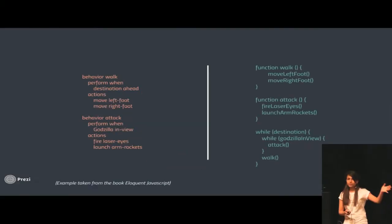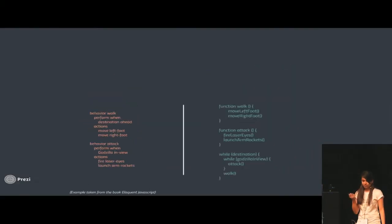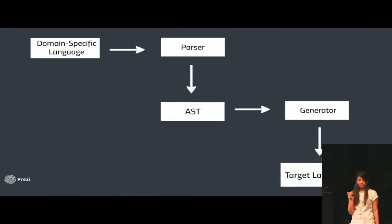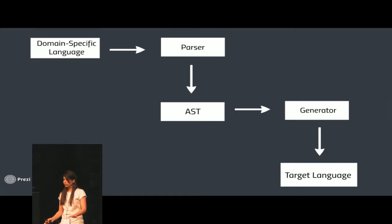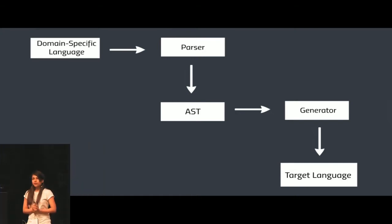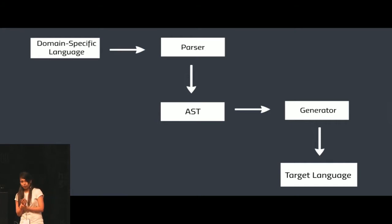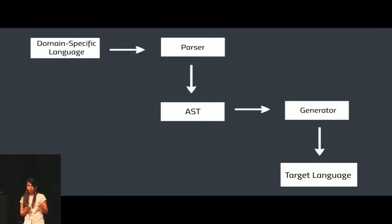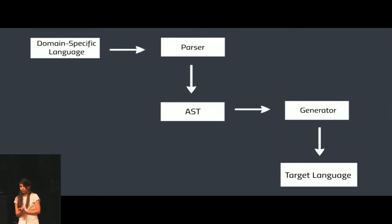This translates so simply to JavaScript. DSLs make sense, right? This is just a warm up to domain specific languages. Let's see how we would have a workflow to compile a domain specific language to a target language. We pass a domain specific language to a parser, we generate the abstract syntax tree for it, we pass it to a generator, and we generate the target language from it.